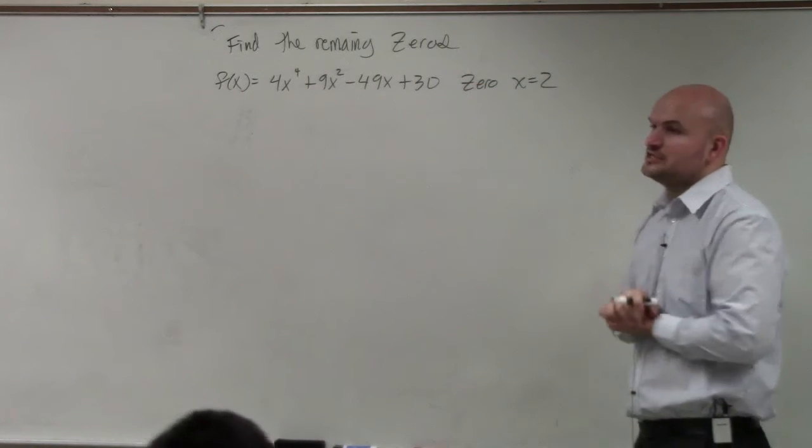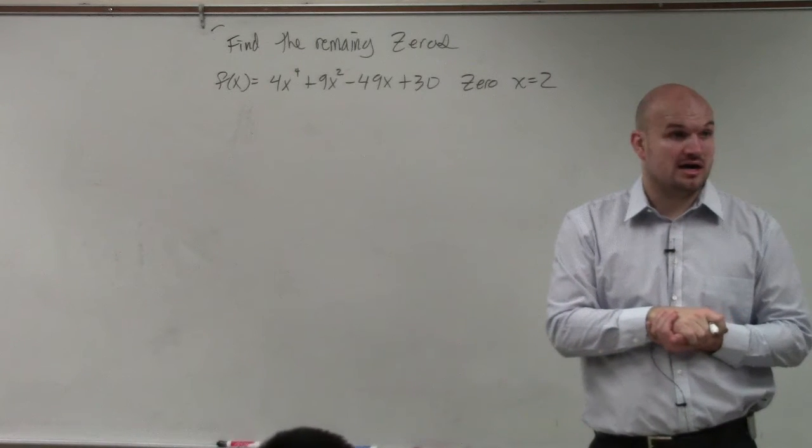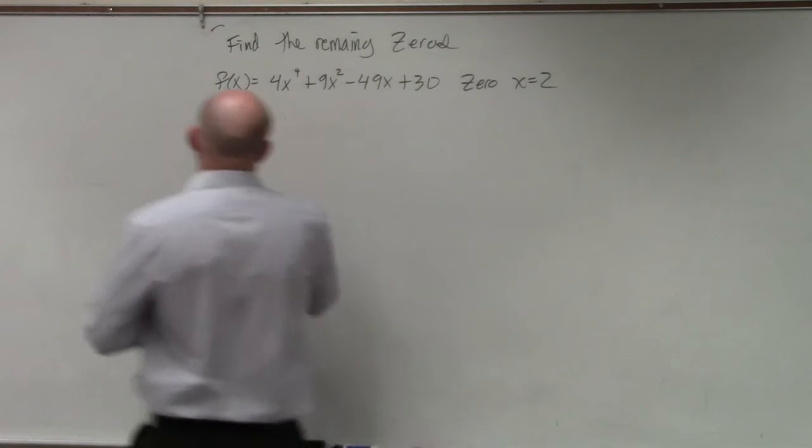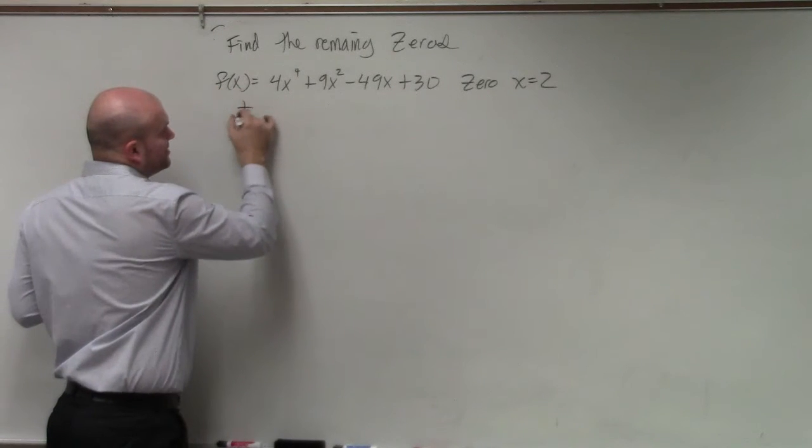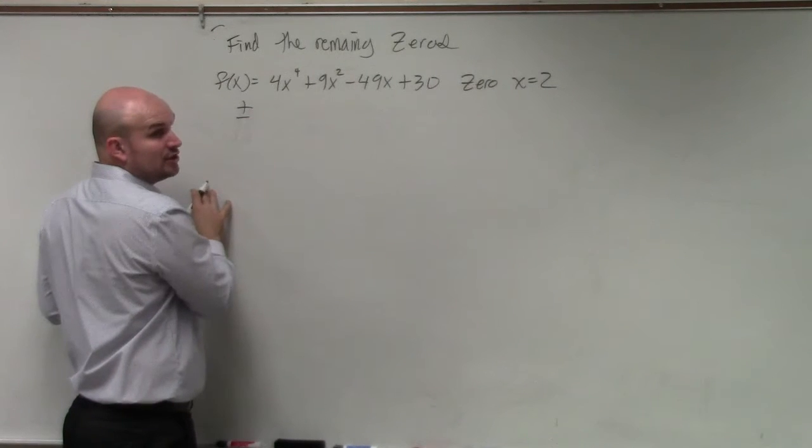So the first thing, let's just go ahead and apply the rational zero test, just to go ahead and factor or to practice with this. So to apply the rational zero test, it's going to be plus or minus the factors of 30. So let's just write out all the factors of 30.